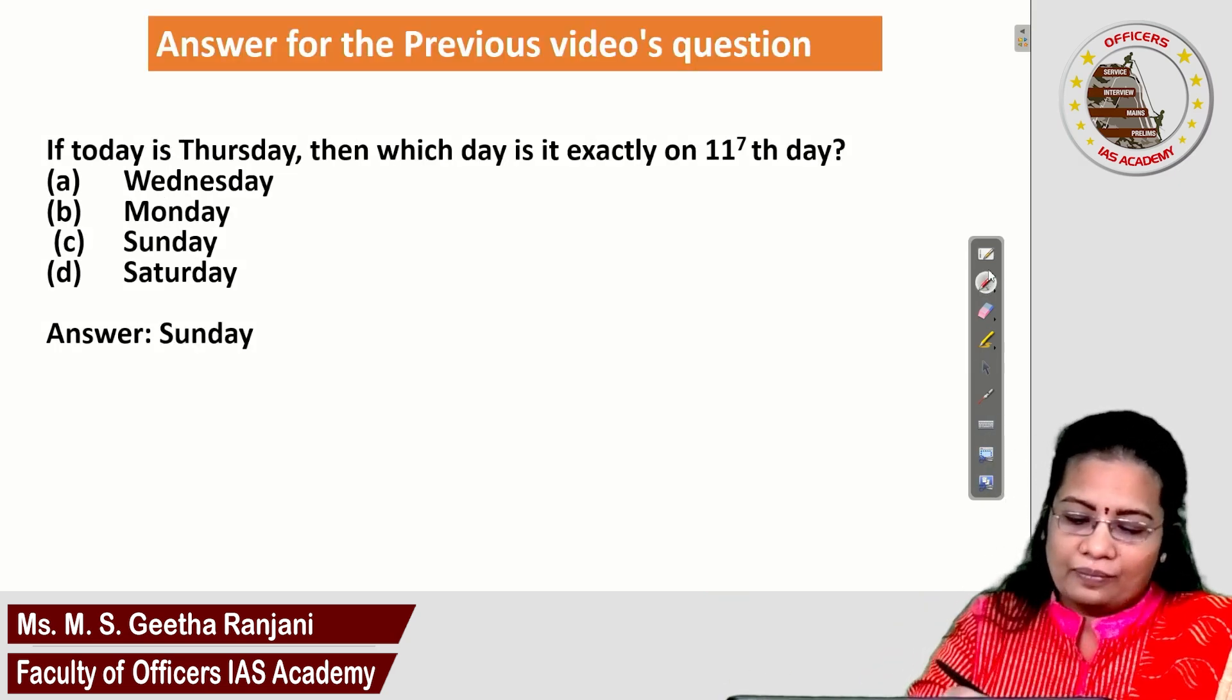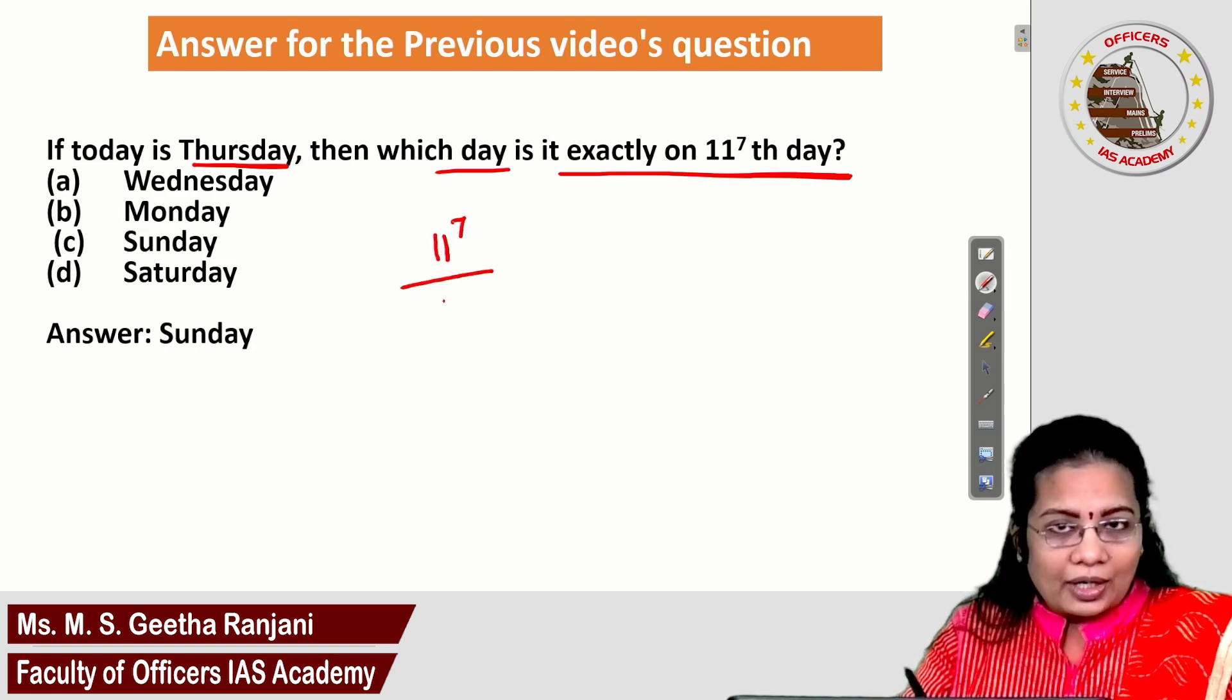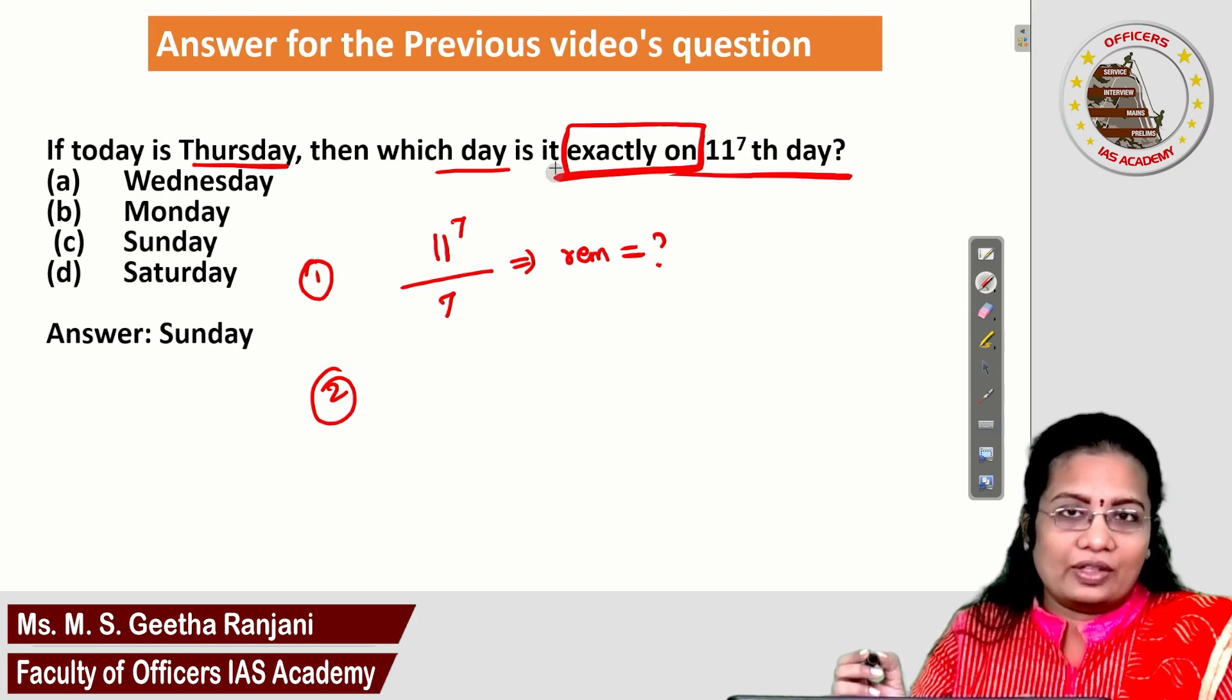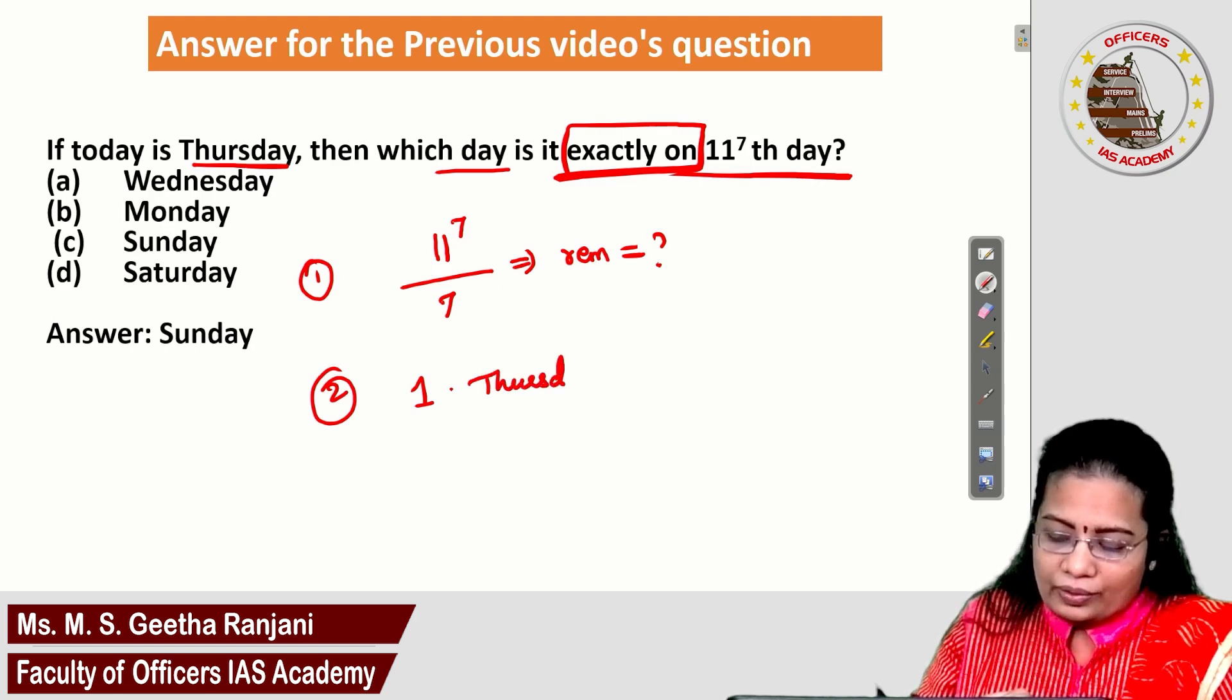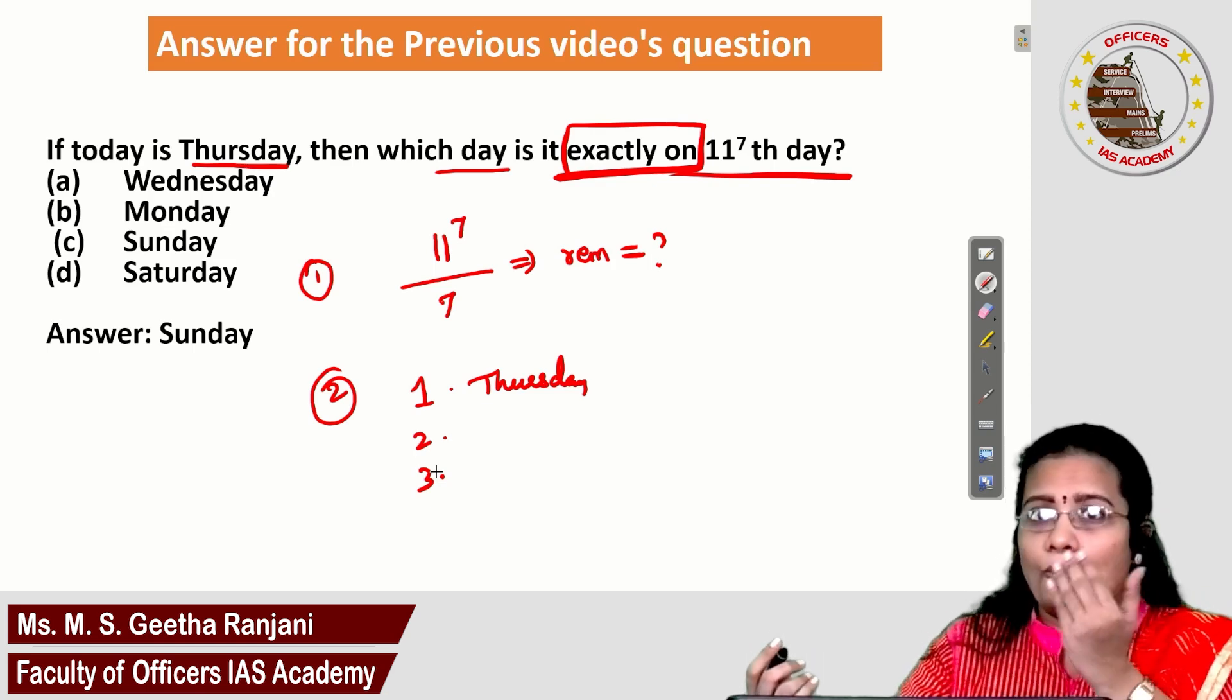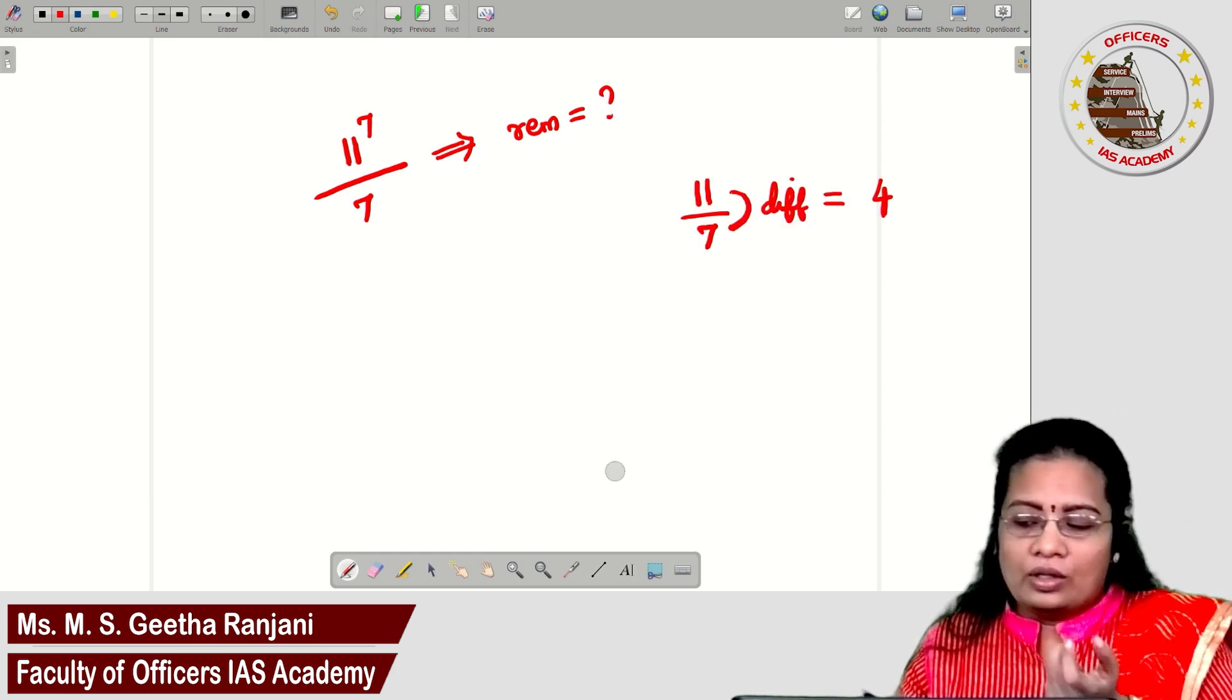Let's see the answer for the previous video's question. If today is Thursday, then which day is it exactly on the 11 power 7th day? 11 power 7 divided by 7 - what is the remainder you want to find? That is step 1. Step 2: exactly on is given. Exactly on means day 1 is the given day. The 1 is Thursday. Then you can find 2, 3. What is the value for the remainder? Based on that, you can take the day. Now let's do the calculation for 11 power 7 divided by 7. What is the remainder?